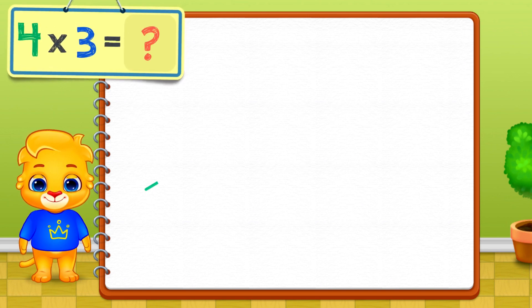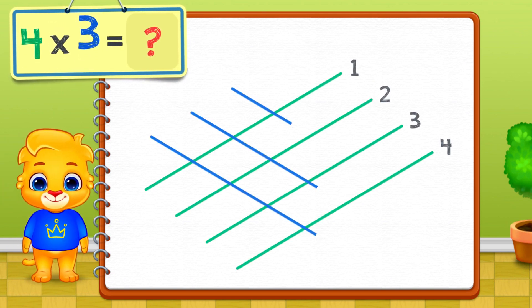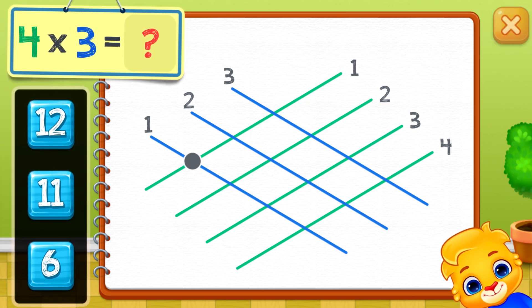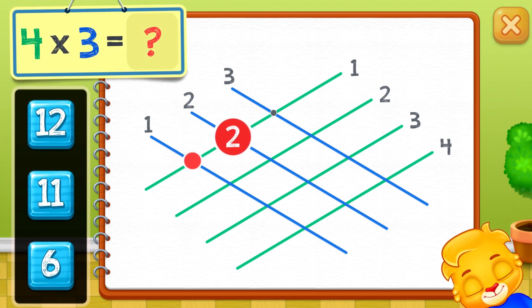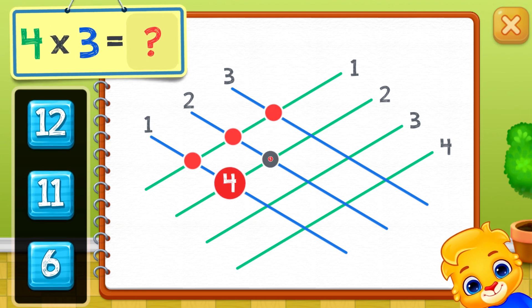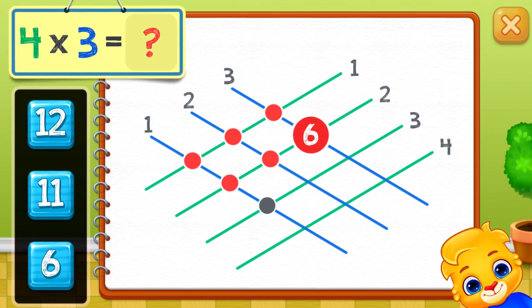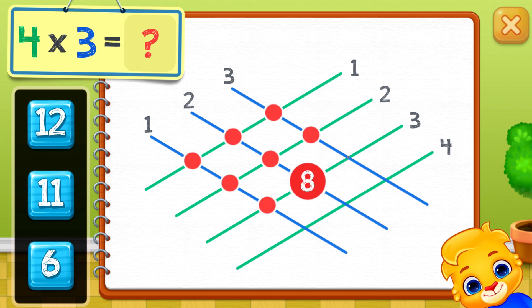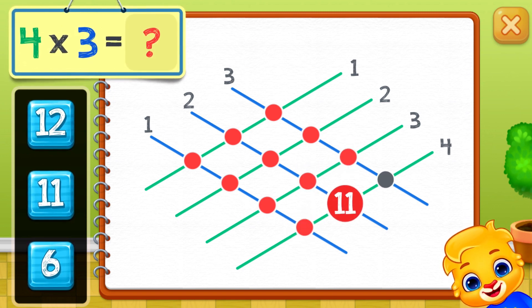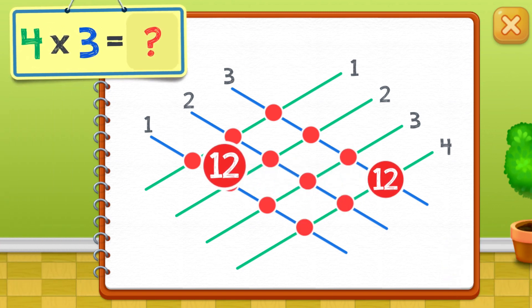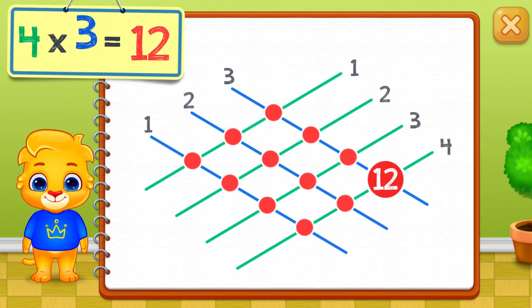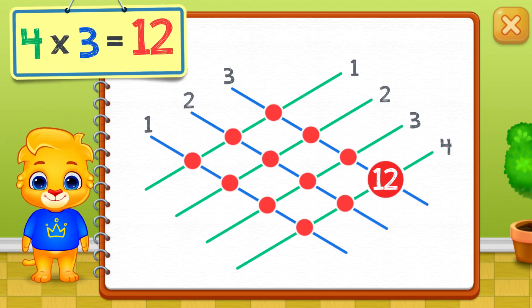Four times three equals — one, two, three, four, five, six, seven, eight, nine, ten, eleven, twelve. Four times three equals twelve.